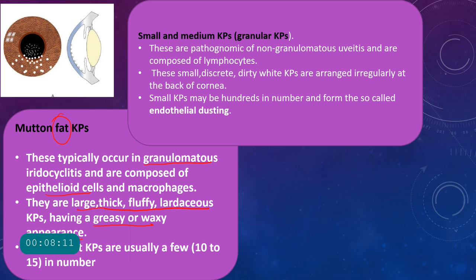The second type of keratic precipitates are small or medium, also called granular KPs, seen more importantly in non-granulomatous uveitis and composed of lymphocytes. They are very small, discrete, and dirty white, arranged irregularly at the back of the cornea, not necessarily in the ALS triangle since they are too small to gravitate down. Sometimes these small KPs are present in hundreds and this is called endothelial dusting, also a feature of non-granulomatous uveitis.